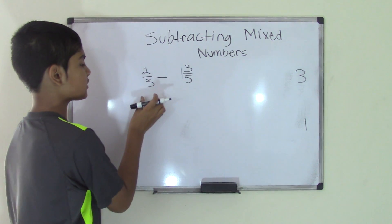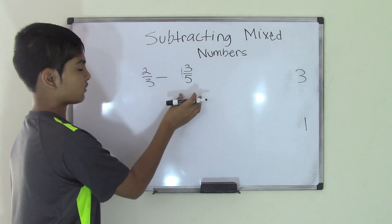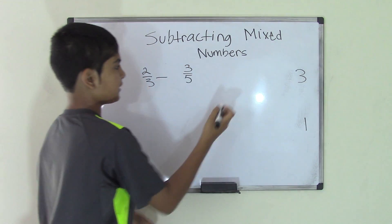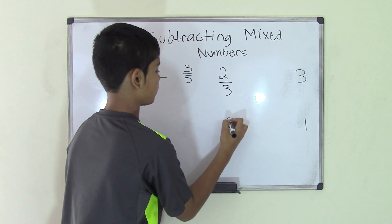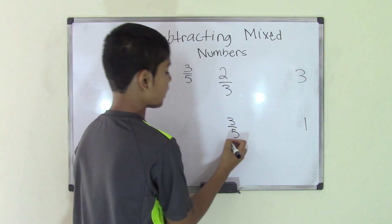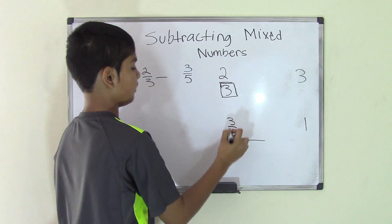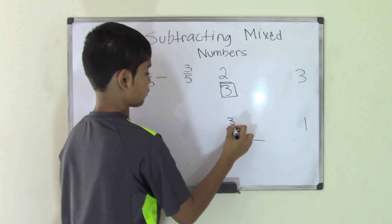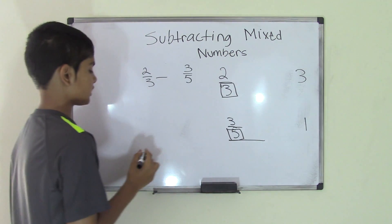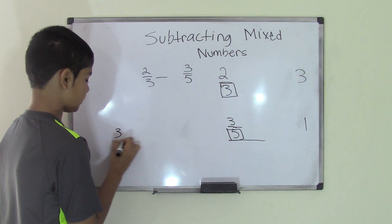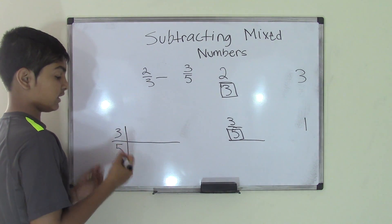So first let's work with 2/3 and 3/5. We need to align these two fractions. Now you can see it better that we need to find the common multiple — the least common multiple — for these two denominators, which are 3 and 5. So let's come over here to the numbers 3 and 5 and find the least common multiple.